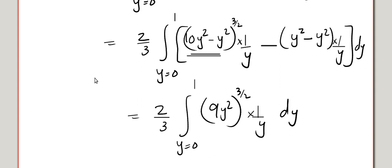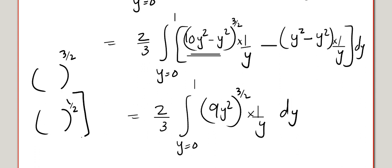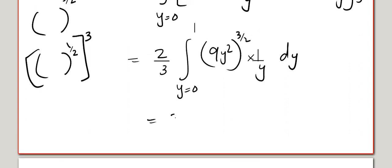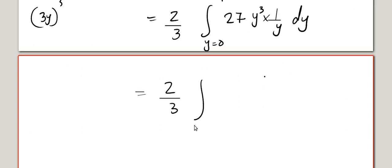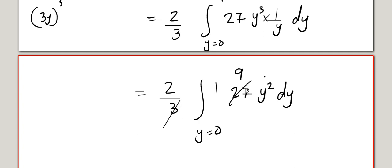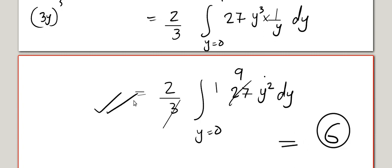Now (9y²)^(3/2) = (√(9y²))³ = (3y)³ = 27y³. So the integral becomes (2/3)·integral from 0 to 1 of 27y³·(1/y) dy = (2/3)·27·integral of y² dy from 0 to 1 = 18·[y³/3] from 0 to 1 = 18·(1/3) = 6. That's the final answer. It's a small video, so bye.